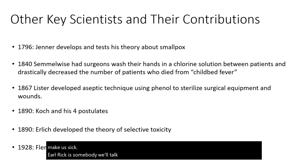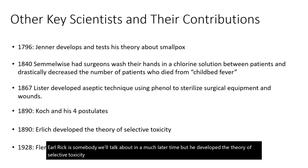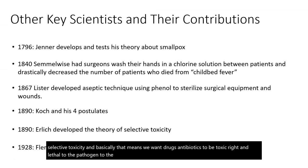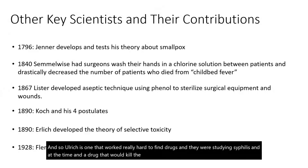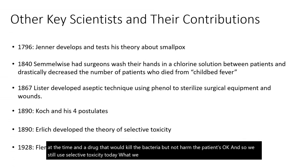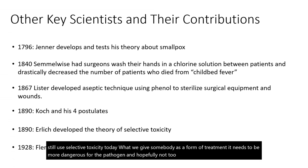Ehrlich developed the theory of selective toxicity — we want drugs and antibiotics to be toxic and lethal to the pathogen but not to the host. We don't want to also make the patient sick when treating them. Ehrlich worked hard to find drugs while studying syphilis — a drug that would kill the bacteria but not harm the patient. We still use selective toxicity today: what we give somebody as treatment needs to be more dangerous for the pathogen and hopefully not too dangerous for the host.